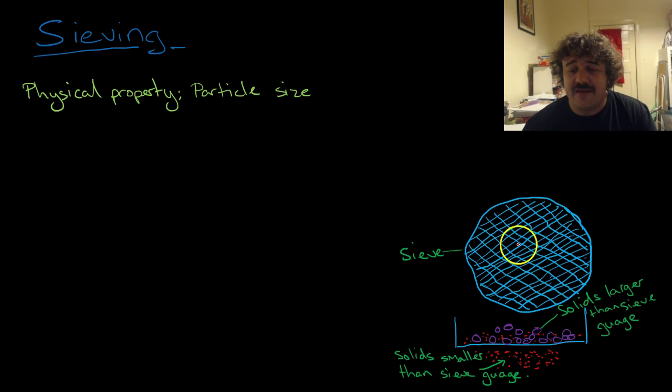Here we have a sieve. We see these are the holes, so it's looking from above. The size of that hole, by the way, is called the gauge.